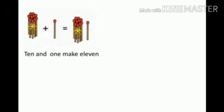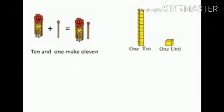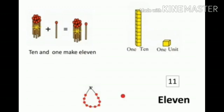Here, one bunch of math sticks is there. In this bunch of math sticks, there are 10 math sticks which are tied together. That is, 1 ten plus 1 math stick equals 11 math sticks. The 10-block has a group — it is 1 ten, and 1 block is 1 unit. 1 string of 10 bits is 1 ten and 1 bit is 1 unit. That is, 1 ten and 1 unit makes 11, and the spelling of 11 is E-L-E-V-E-N.